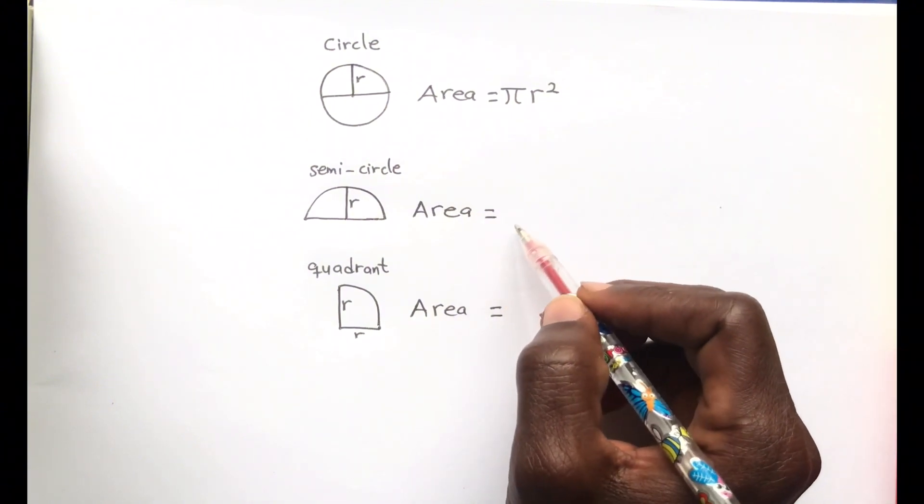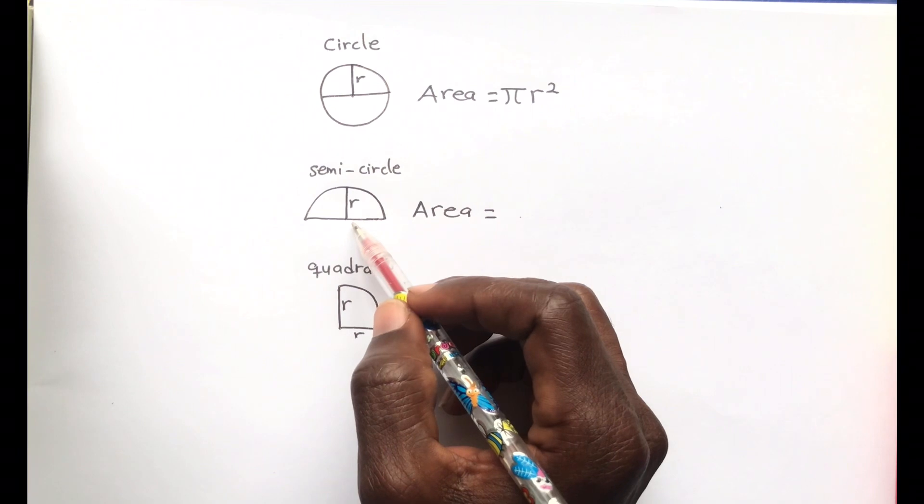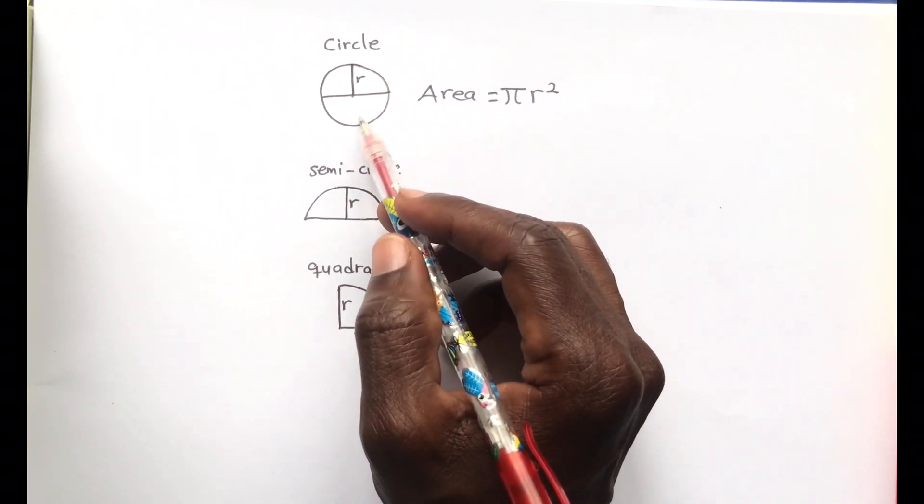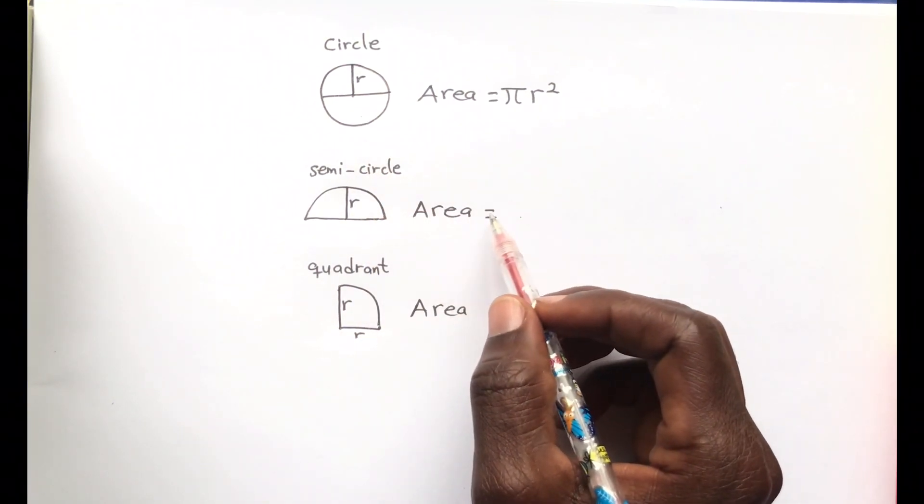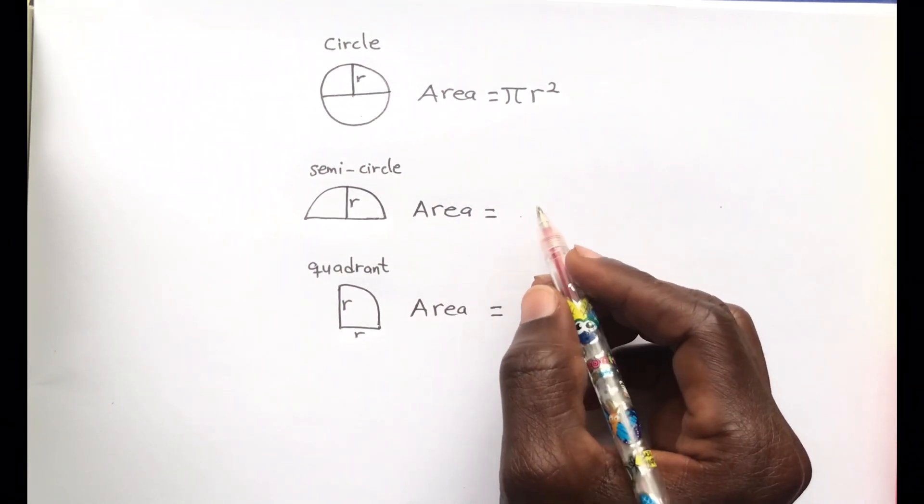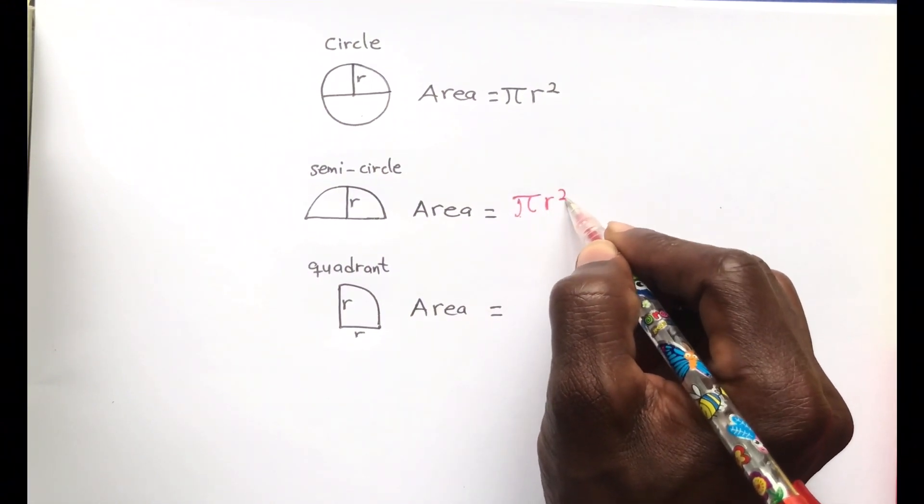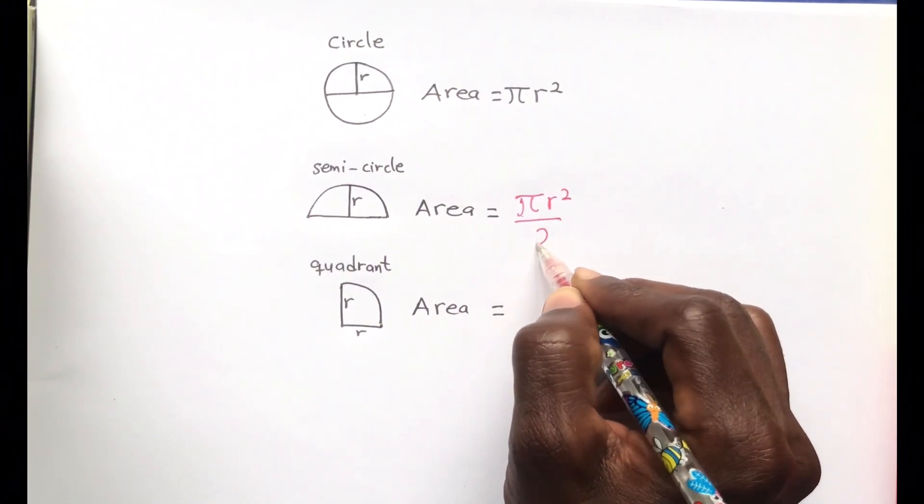So this becomes very simple when finding that of a semicircle. For a semicircle, it's half of a circle. So for the area, we just divide the area of the circle by 2, which will be pi r squared over 2.